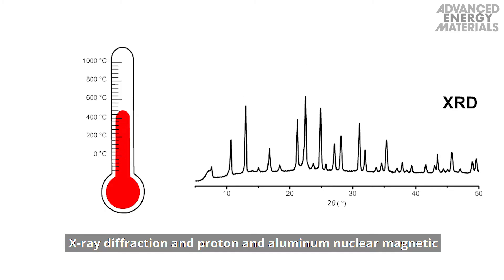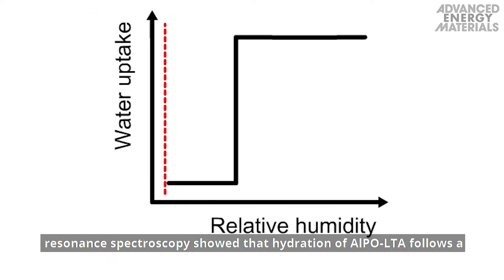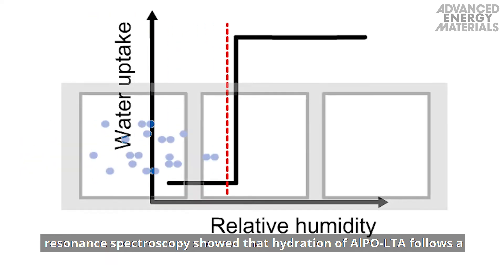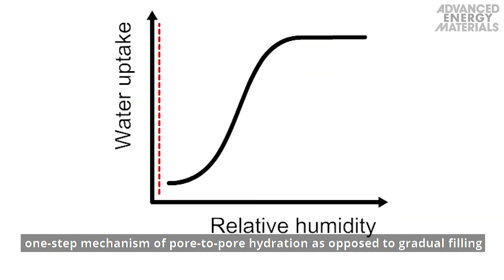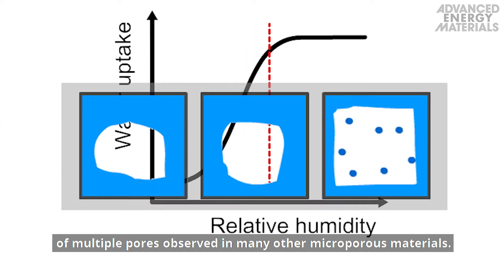X-ray diffraction and proton and aluminum nuclear magnetic resonance spectroscopy showed that hydration of aluminophosphate LTA follows a one-step mechanism of pore-to-pore hydration, as opposed to gradual filling of multiple pores observed in many other microporous materials.